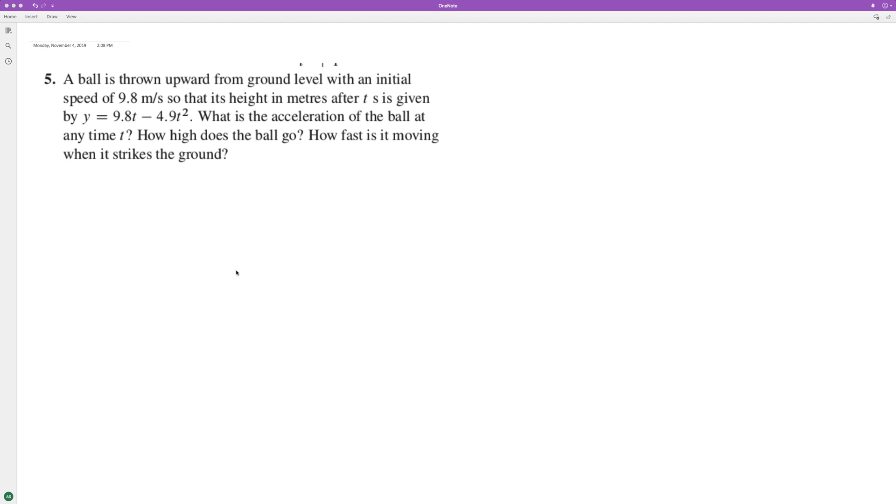A ball is thrown upward from the ground level with an initial speed of 9.8 meters a second. So what's its height in meters after T? S is given by Y equals 9.8T minus 4.9T squared.